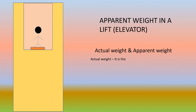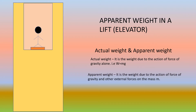Actual weight — we all know what it is — it is the weight due to the action of the force of gravity alone. That means the weight we feel in our body is mass times gravity, that is the product of mass M and gravity g. Now what is apparent weight? Apparent weight is actually the normal force from the scale, or the force experienced on the body from the floor. It is the weight due to the action of the force of gravity and other external forces on the mass M.